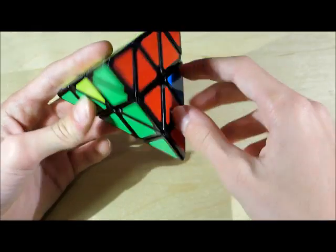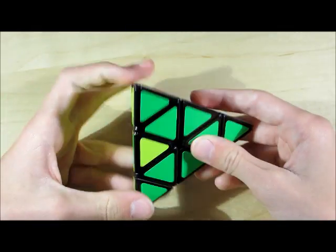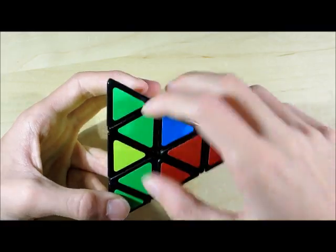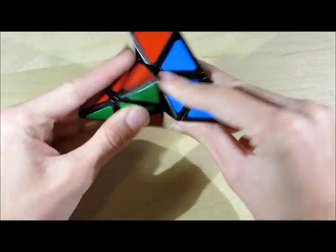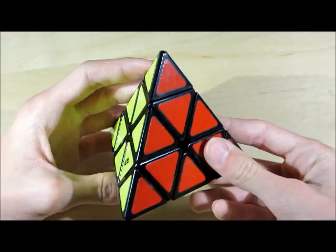Now if you ever get the case where you have two edges that are across from each other like this, you want to just bring it into their places like this. So just twist it like this, do the algorithm, and then you bring this back.